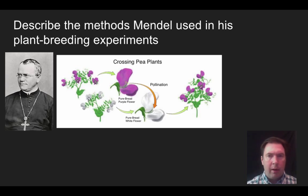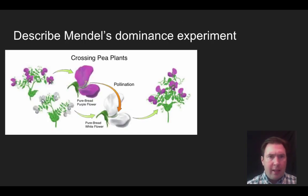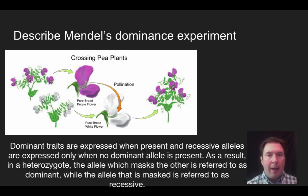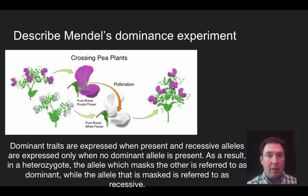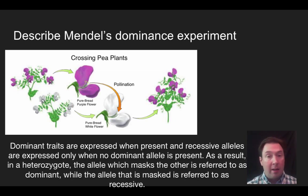This leads to the idea of dominance — that the color purple and the color white are not equal when you make the cross. The purple flower ends up being dominant and the white color ends up being recessive. This is the law of dominance: when you cross two plants with Mendelian style traits, one of the phenotypes is going to be expressed in the next generation and the other will not. A dominant trait is expressed when present, and a recessive trait is only expressed when there's no dominant present.